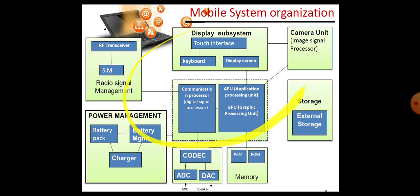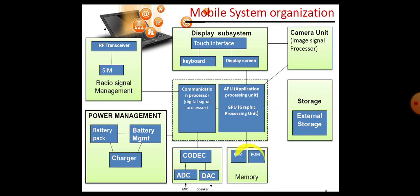Look at the picture. What are the various components you can see? In the center: a communication processor, an application processing unit, a graphic processing unit, radio signal management, display subsystem, camera unit, storage, memory, codec and power management.